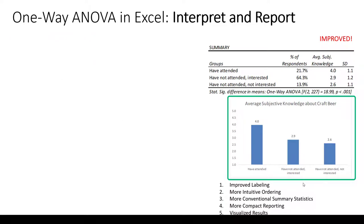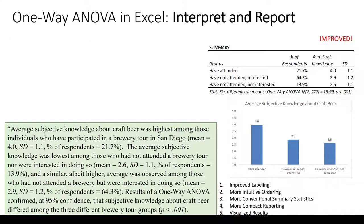Here's one approach for the written report: 'Average subjective knowledge about craft beer was highest among those who participated in a brewery tour in San Diego (M = 4.0, SD = 1.1, 21.7% of respondents). The average was lowest among those who had not attended nor were interested in doing so (M = 2.6, SD = 1.1, 13.9%). A similar albeit higher average was observed among those who had not attended but were interested (M = 2.9, SD = 1.2, 64.3%). Results of a one-way ANOVA confirmed at 95% confidence that subjective knowledge differed among the three groups (p < 0.001).'